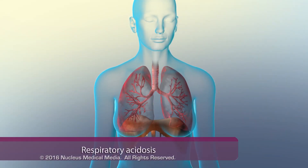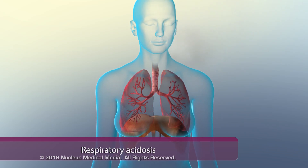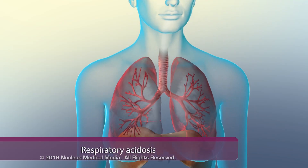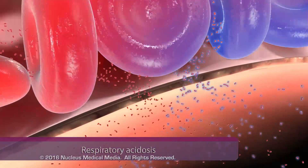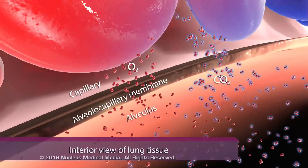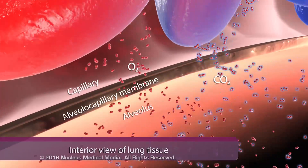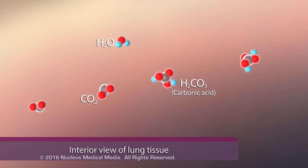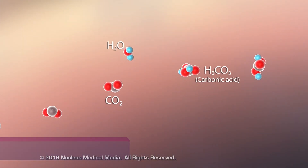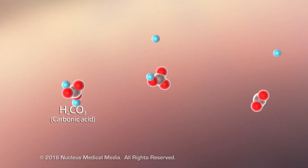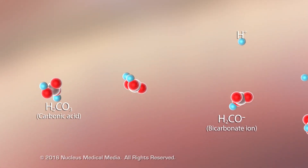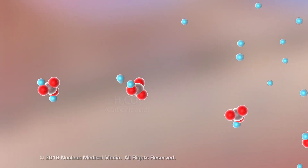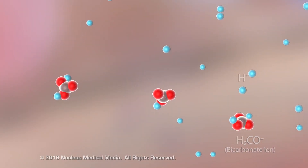Respiratory acidosis occurs when breathing difficulties allow carbon dioxide to build up in the body. If respiration cannot keep pace with carbon dioxide production, carbon dioxide builds up in the tissues. Excess carbon dioxide combines with water to produce carbonic acid. Carbonic acid disassociates into bicarbonate and hydrogen ions. The buildup of hydrogen ions lowers pH and causes acidosis.